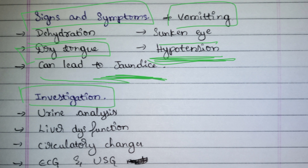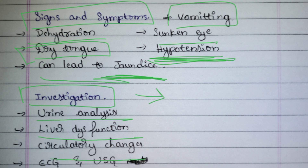For investigation, we perform a regular routine checkup. First we take the patient's previous history and physical examination. Apart from this, we do blood examination, urine analysis, and liver function test. We also check circulatory changes through vital signs, and mainly ECG and USG are performed.